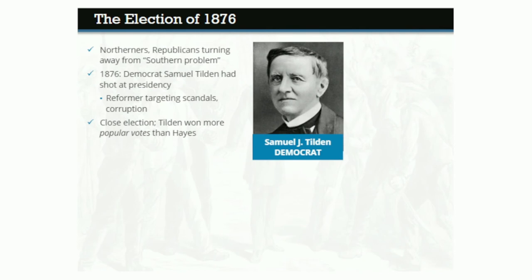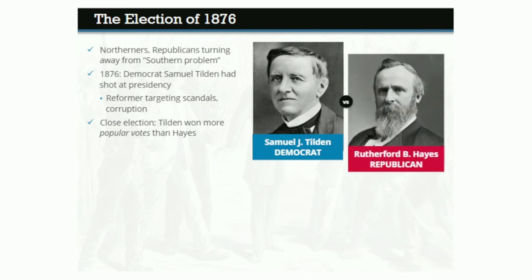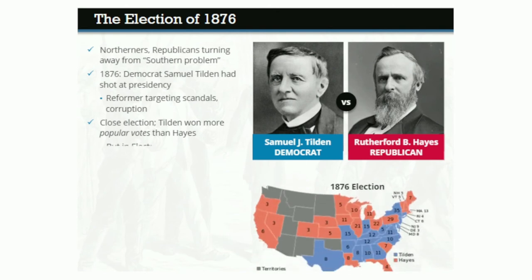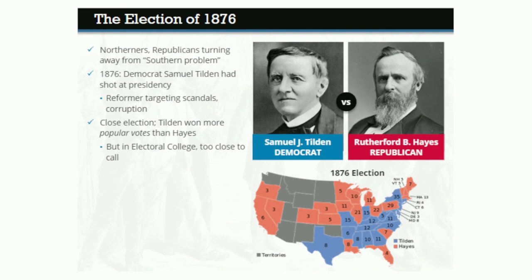Tilden won about 264,000 more popular votes than his Republican opponent, Ohio Governor Rutherford B. Hayes. But in the Electoral College, which actually determines the winner, the election was too close to call. The electoral votes of three Southern states — Florida, Louisiana, and South Carolina — were in dispute. These were the only states in the South not yet under Redeemer governments. Both Democrats and Republicans claimed victory in those states and sent conflicting electoral votes to be counted by Congress, which was put in the position of determining who had really won.